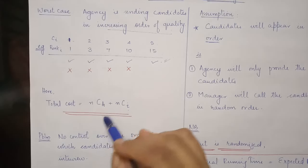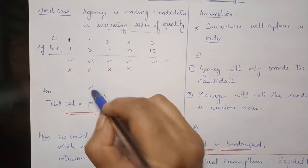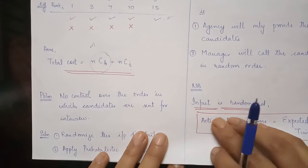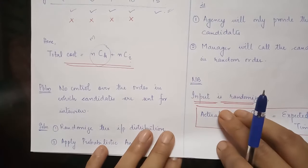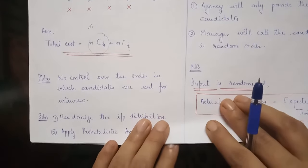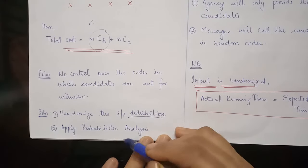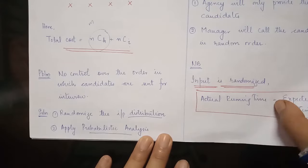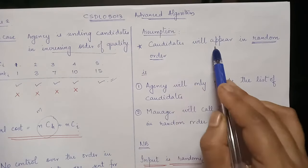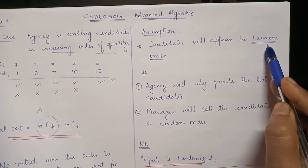Our objective is to reduce this parameter — here m is equal to n in the worst case. In this problem, as per the strategy discussed, there is no control over the order in which candidates are sent for interview. The solution is to randomize the input distribution and apply probabilistic analysis. We assume that candidates will appear in random order rather than the agency sending one candidate per day.